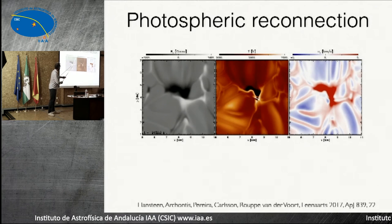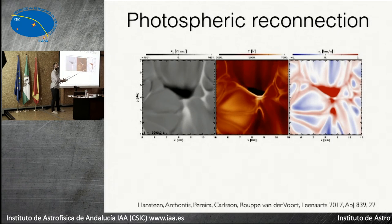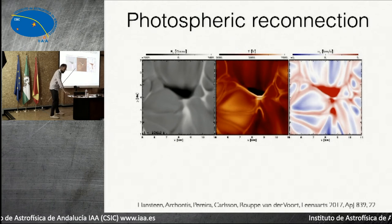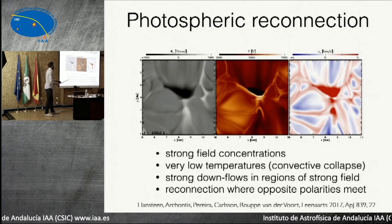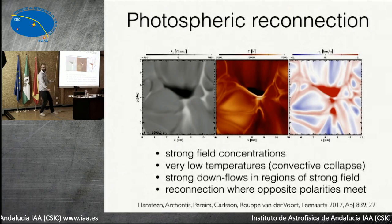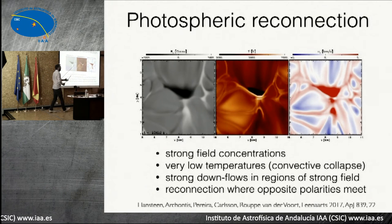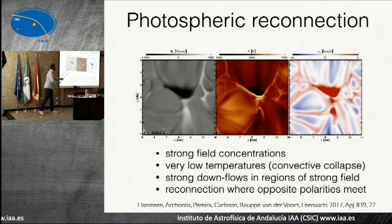Here is a cut of what happens in the photosphere: magnetic field, temperature, and velocity. We see regions where opposite-directed magnetic fields meet. The field lines are meeting here, and we get a small little region of brightening — the gas is being heated up. We get strong field concentrations, very low temperatures around the black region because the plasma is convecting and collapsing. We get strong downflows where the field is strong. And when the field meets, we get reconnection and heating in that little region where reconnection is going on.